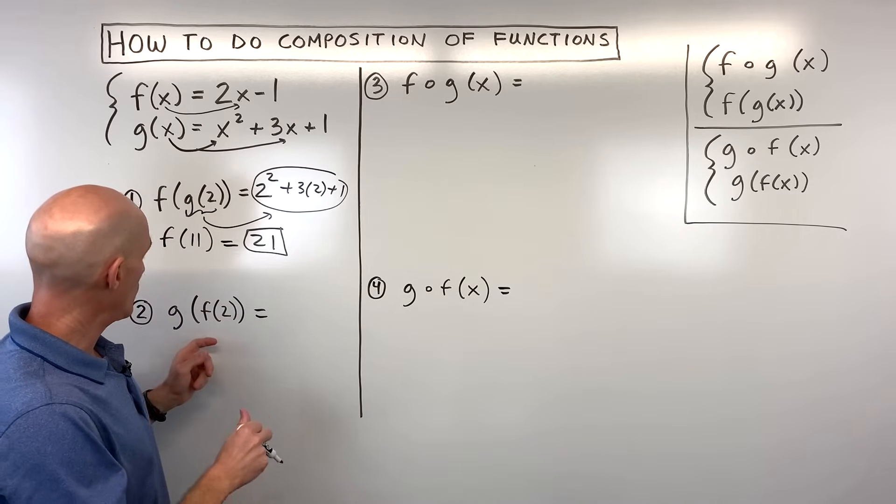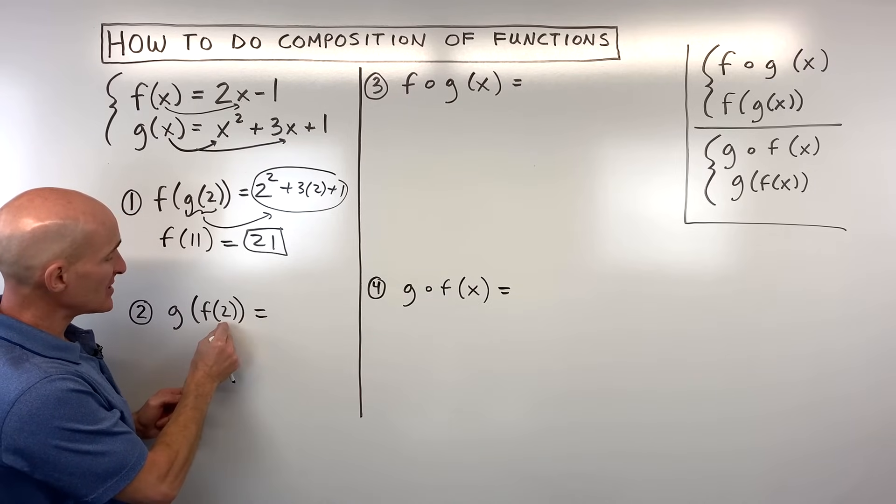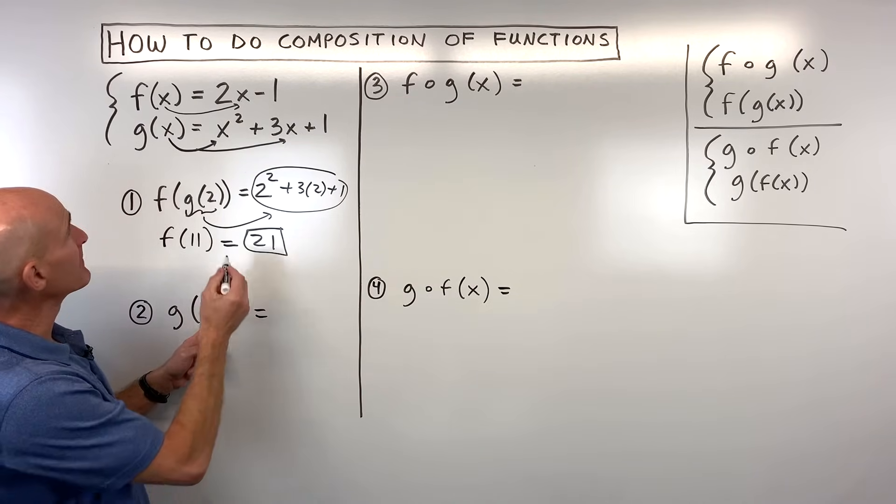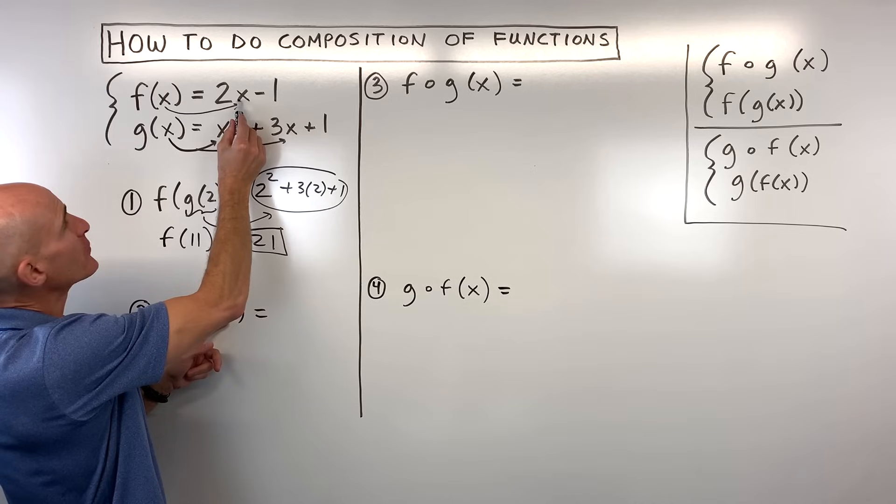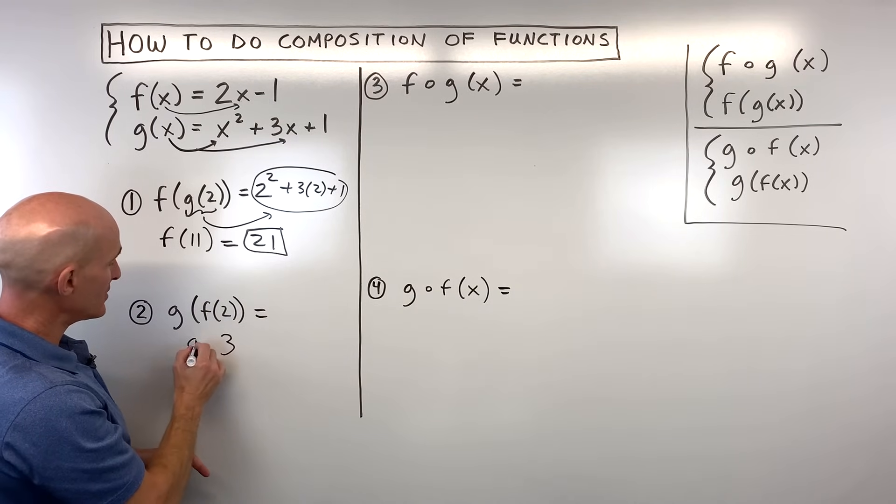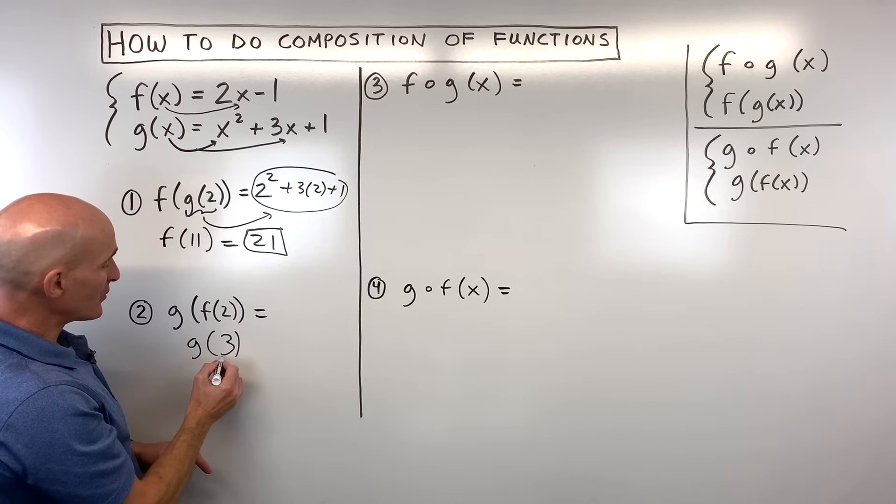Let's look at the next one. We've got g of f of 2. So here what you can see is we're starting with our f function and we're putting 2 in for x. So we have 2 times 2 is 4 minus 1 is 3. So this quantity here is f of 2 is equal to 3.